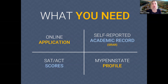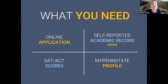In addition to the online application, there are other components needed for a completed application. One is the Self-Reported Academic Record, or SRAR. You don't need to request an official transcript at this stage — instead, get an unofficial copy and use it to complete the SRAR accurately. If you're admitted and decide to attend, your school counselor will send a final official transcript after graduation to verify your high school graduation and compare it to the SRAR, which is why accuracy is important.